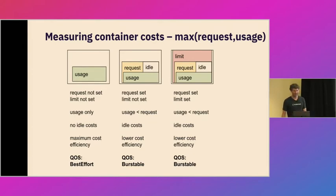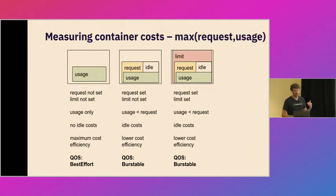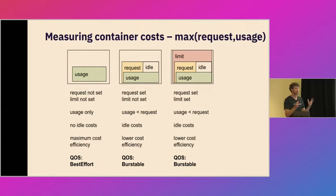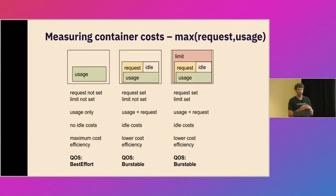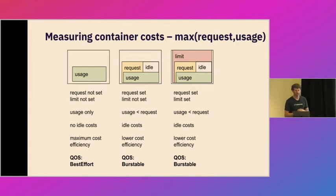Second, if you look at a container with a request set where usage is actually less than that request, this container would be billed at the amount of their request for different resources. They would have some amount of idle cost — not perfect cost efficiency because there would be some waste or idle. But again, they would have some expectations in terms of quality of service, given that the scheduler has allocated these resources for this particular pod or container.